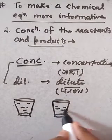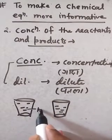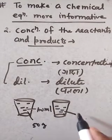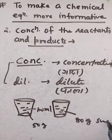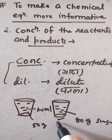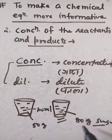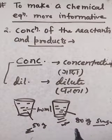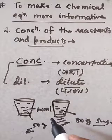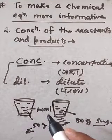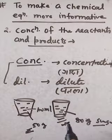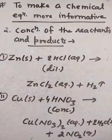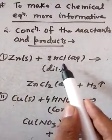Consider two beakers both containing 100 ml of water. In the first beaker we add 50 grams of sugar, and in the second beaker 80 grams of sugar. The second beaker has more solute, so it is more concentrated than the first. We say the second is the concentrated solution and the first is the dilute solution.